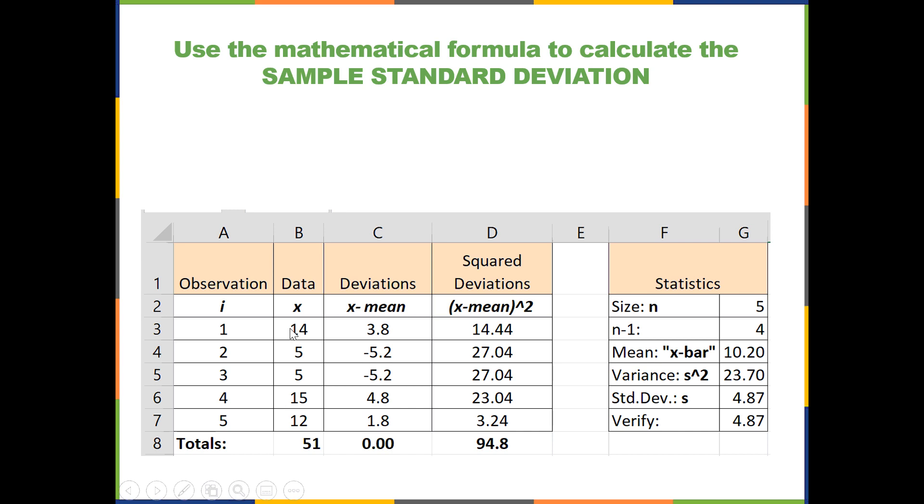Here is the sample standard deviation formula carried out in Excel, where we have the formula S equals, as it's shown here. Carrying that out would involve everything looking the same, except for when we get to the part where we divide the total of the squared deviations. Instead, we're dividing by one fewer to get our variance and then take the square root. Verify this with STDEV.S.